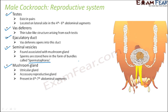The mushroom gland is an accessory reproductive gland that plays a role in forming the inner layer of the spermatophore wall. The spermatophore has a three-layered wall — the inner layer is formed by the mushroom gland, the middle layer is formed by the ejaculatory duct, and the outermost layer is formed by the phallic gland. The sperms are well protected within these three layers.